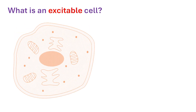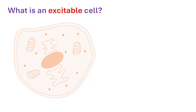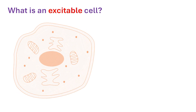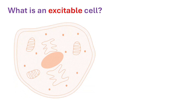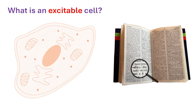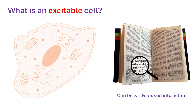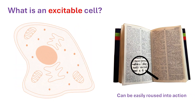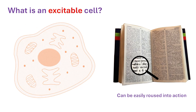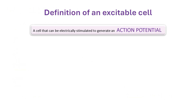In this video I will explain what an excitable cell is and what makes it excitable. The dictionary defines excitable as being capable of being easily roused into action, especially in response to a stimulus. An excitable cell is a cell that can be stimulated electrically to generate an action potential. I will explain what that is in a minute.